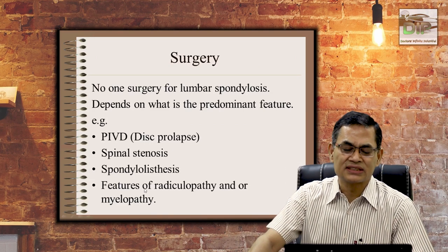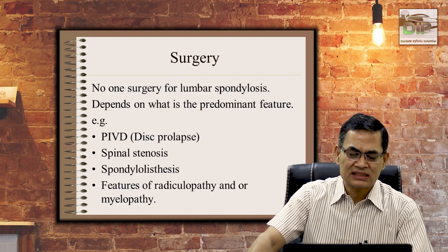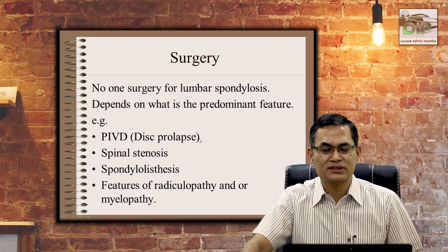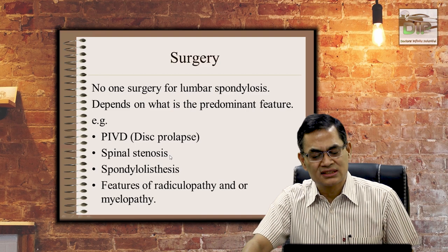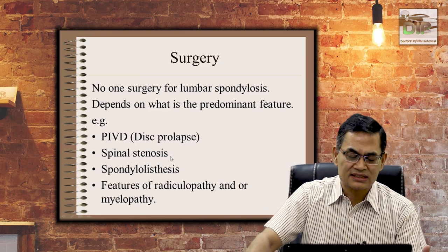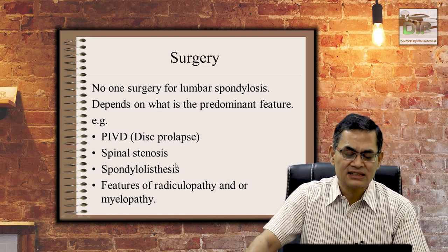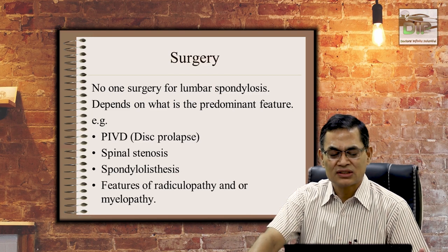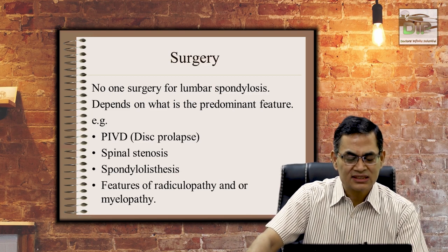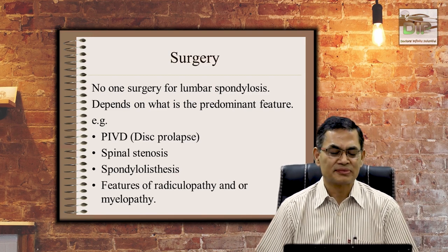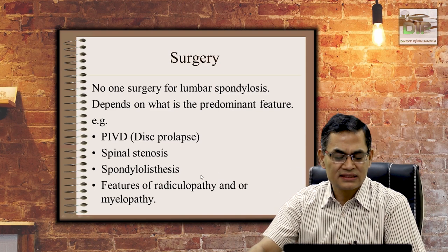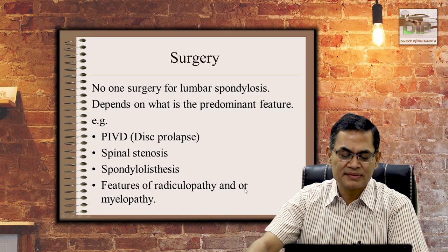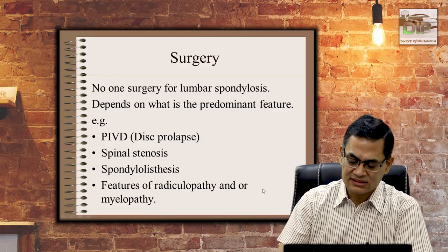If nothing works, surgery is the remaining option. For the lumbar spine, the surgery depends on the predominant feature: if it is a prolapsed intervertebral disc, a discectomy is performed; if spinal stenosis predominates, surgery to increase the spinal canal diameter is done. If spondylolisthesis is present and dynamic X-rays in full flexion and extension show movement between adjoining vertebrae — indicating instability — fusion of those two levels is required. The specific surgical approach also varies depending on whether the patient has radiculopathy or myelopathy.